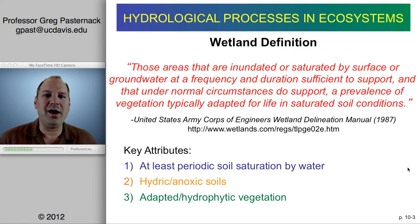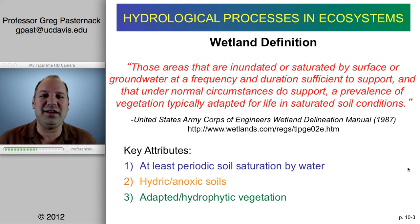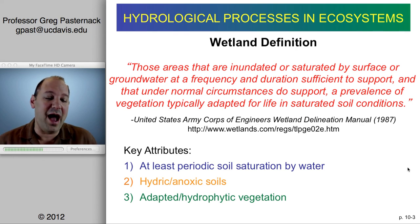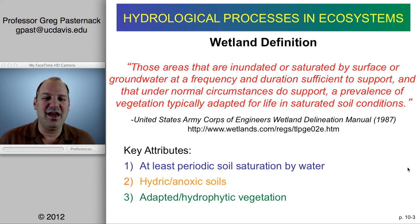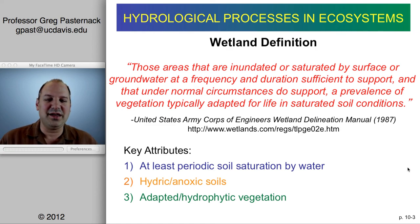So what is a wetland? It seems like a basic thing to say, but actually it isn't as obvious as you think. Is it just land that's wet? How wet does it have to be? How often does it have to be wet? Whenever you try to define something, you run into all kinds of philosophical problems.